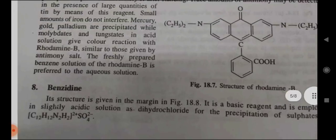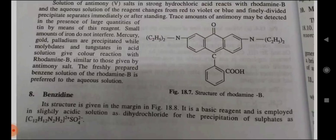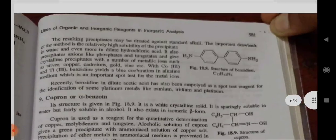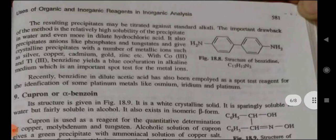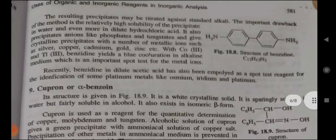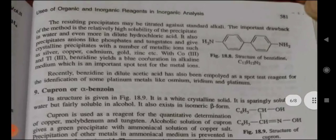Eighth — Benzidine: its structure is given in figure 18.8. It is a basic reagent employed in slightly acidic solution as the dihydrochloride for the precipitation of sulfates as C12 (benzidine sulfate). The resulting precipitate may be titrated against standard alkali. An important drawback of this method is the relatively high solubility of the precipitate in water, and even more so in dilute hydrochloric acid. It also precipitates anions like phosphate and tungstate, and gives crystalline precipitates with a number of metallic ions such as silver, copper, cadmium, gold, and zinc. With Co2+ and Ti, benzidine gives a coloration in alkaline medium, which is an important spot test for metal ions. Recently, benzidine in dilute acetic acid has also been employed as a spot test reagent for the identification of some platinum metals like osmium, ruthenium, and platinum.